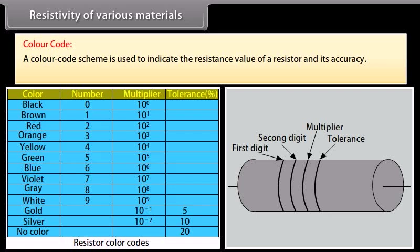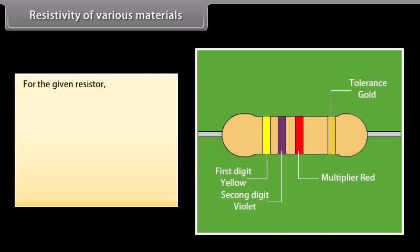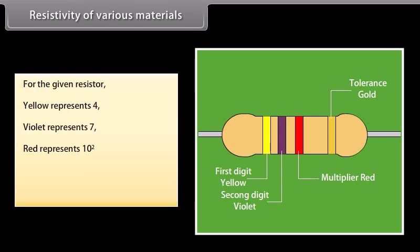A colour code scheme is used to indicate the resistance value of a resistor and its accuracy using coloured stripes. For example: yellow represents 4, violet represents 7, red represents 10 raised to the power 2, and gold represents 5% tolerance. Combining this data, the total resistance is 47 × 10² ohm with 5% tolerance.